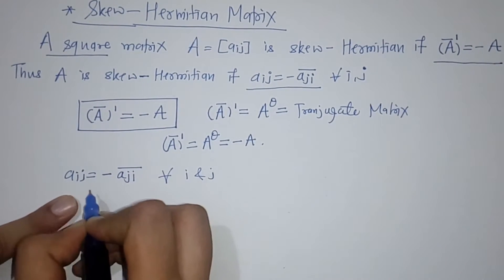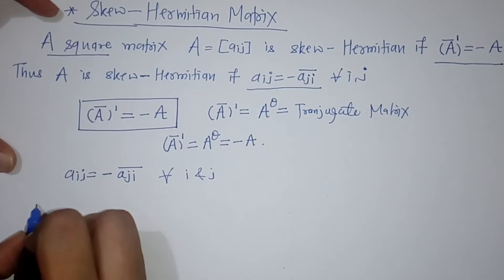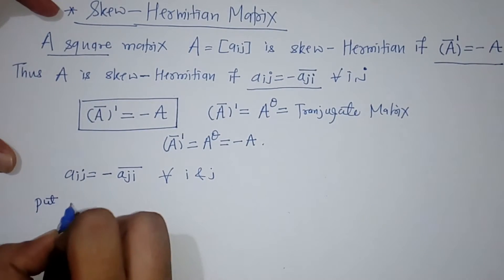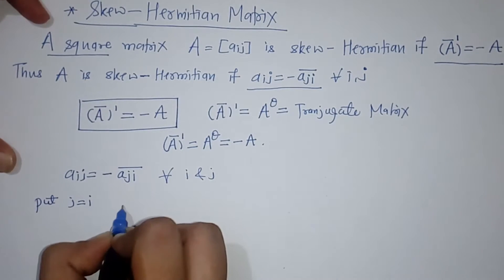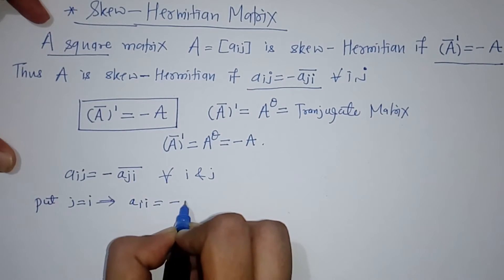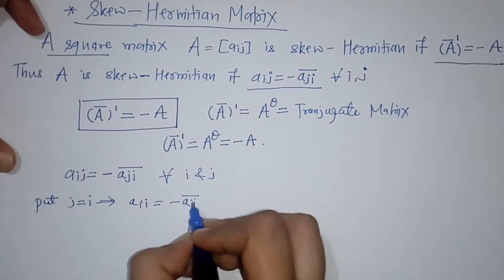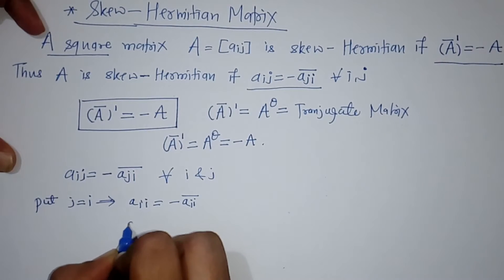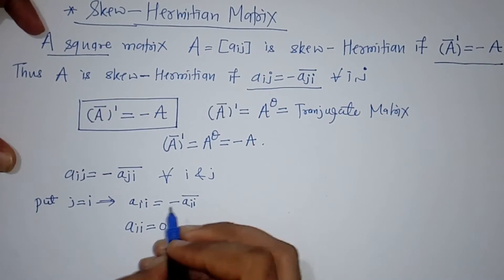Now, what about diagonal elements? To find the condition for diagonal elements, we put j equals i. This gives us Aii equals minus of Aii-conjugate, which implies Aii plus Aii-bar equals zero.